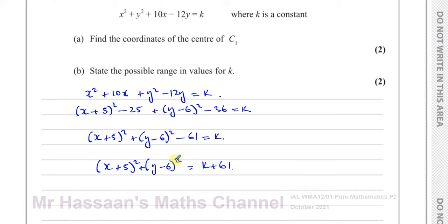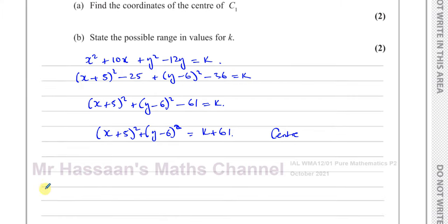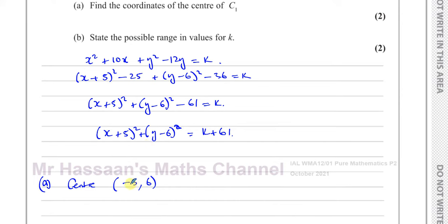From this standard form we can determine the center of the circle. The center is the opposite sign of what's in each bracket — the x coordinate is negative 5 and the y coordinate is positive 6. That's the center of the circle. It's always the opposite sign of whatever's inside the bracket — basically the value that makes each bracket equal to zero gives you the coordinate of the center.